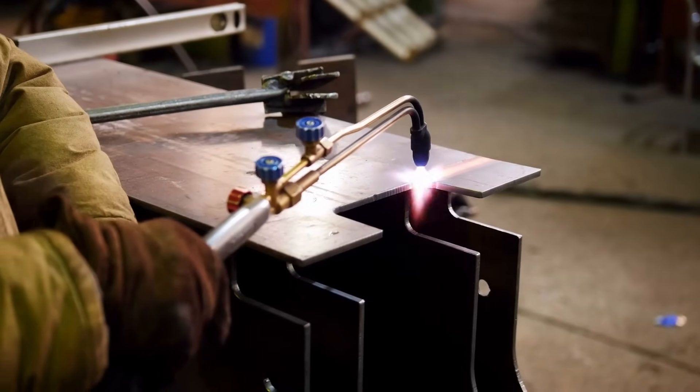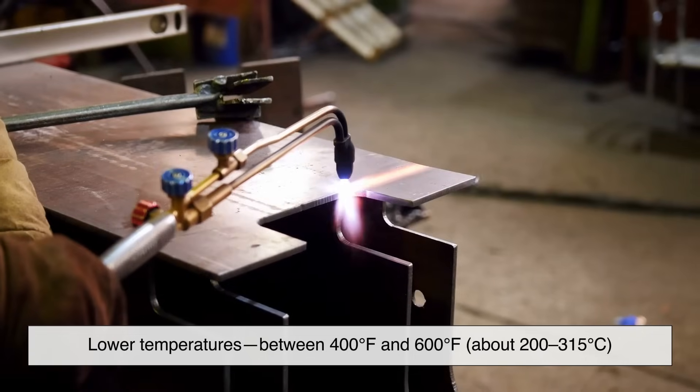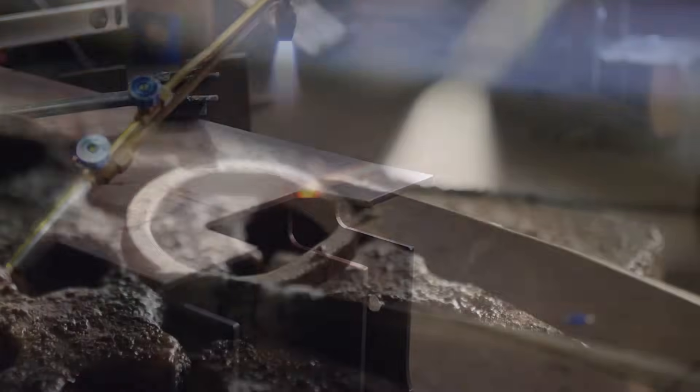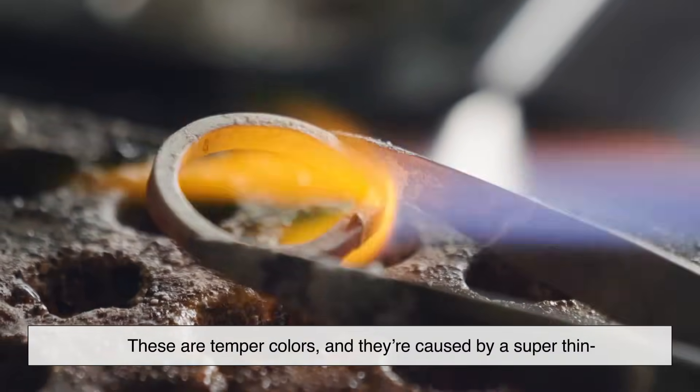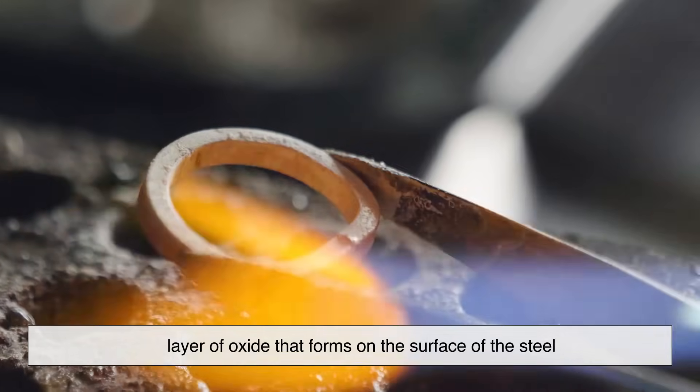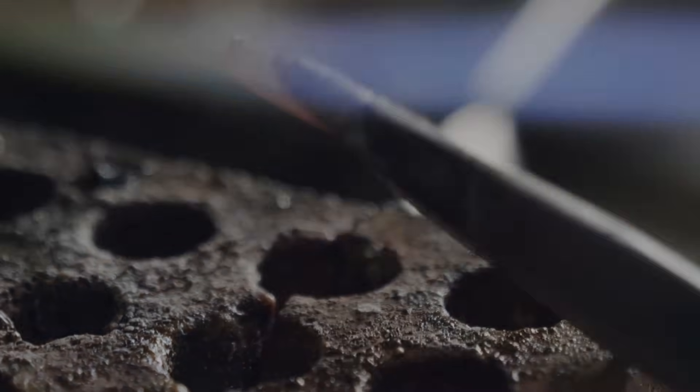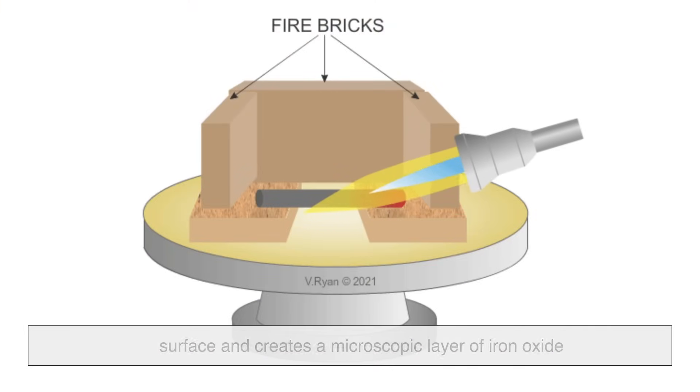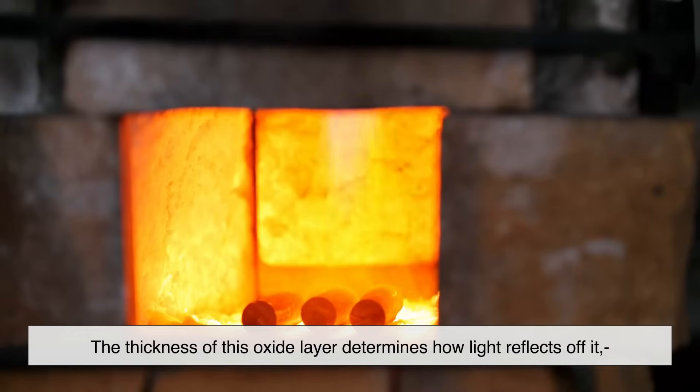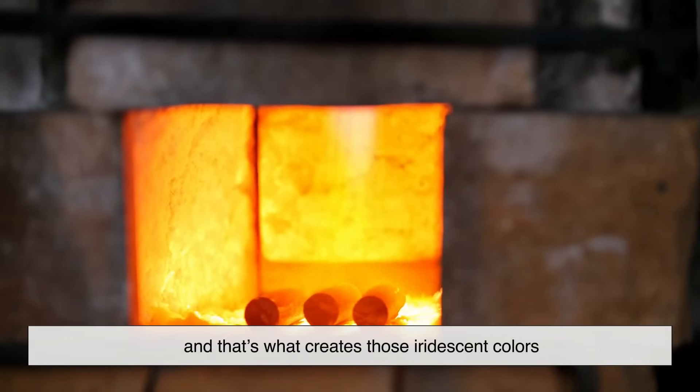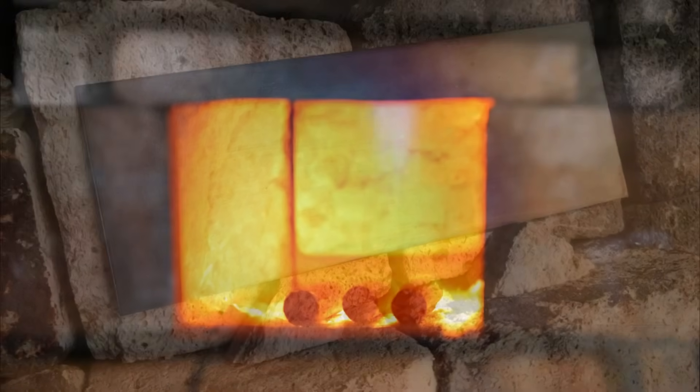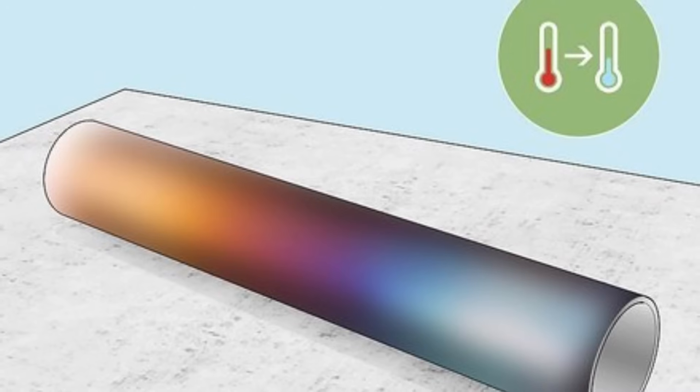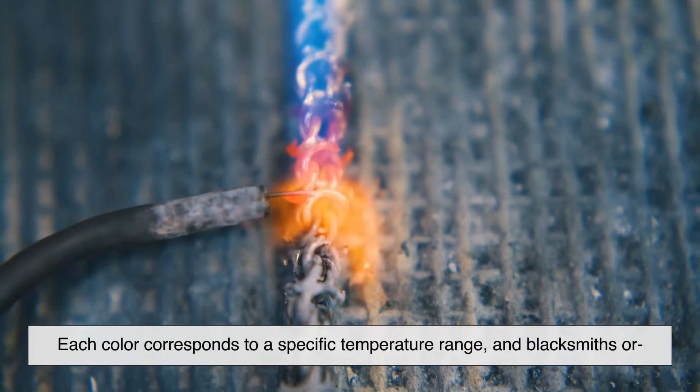But there's another type of color change that's not about glowing. It happens at lower temperatures, between 400 degrees Fahrenheit and 600 degrees Fahrenheit, about 200 to 315 degrees Celsius, when the steel is not glowing visibly. These are temper colors, and they're caused by a super thin layer of oxide that forms on the surface of the steel. When you gently heat steel, oxygen in the air reacts with the surface and creates a microscopic layer of iron oxide. The thickness of this oxide layer determines how light reflects off it, and that's what creates those iridescent colors. You'll see a rainbow of shades depending on the exact temperature—pale yellow, straw, brown, purple, blue, and even gray. It's like a heat-induced mood ring. Each color corresponds to a specific temperature range, and blacksmiths or bladesmiths use this as a guide during heat treatment.